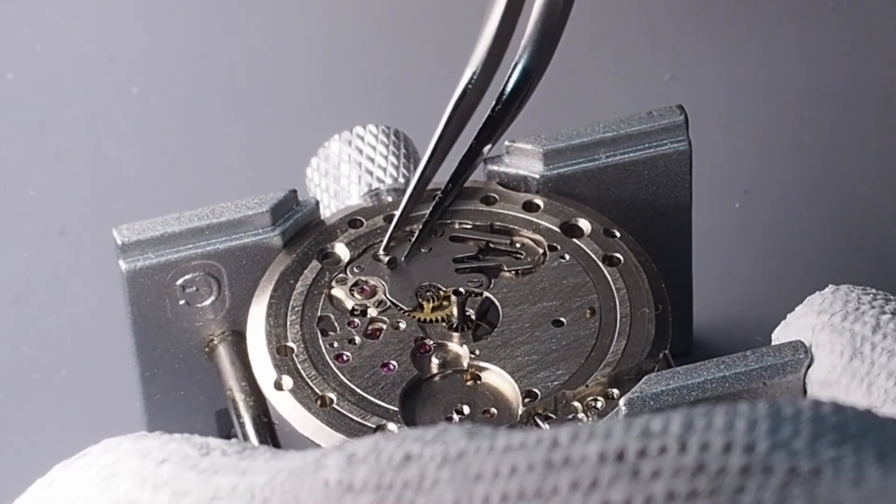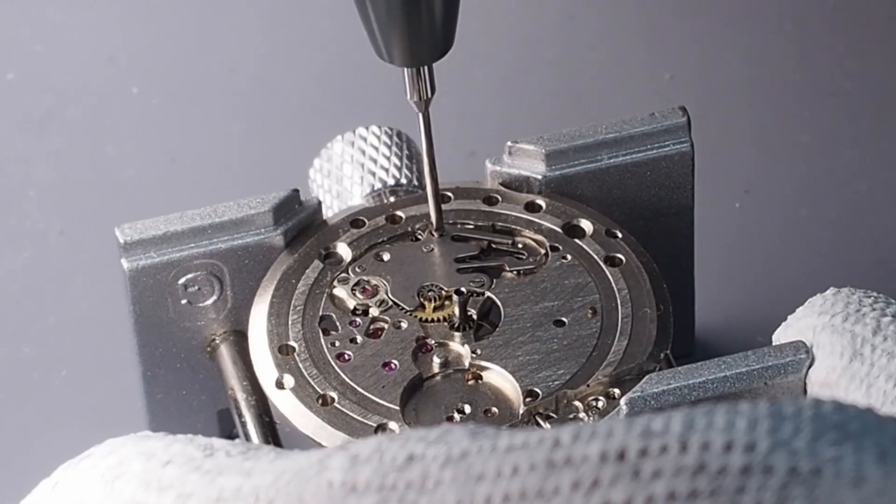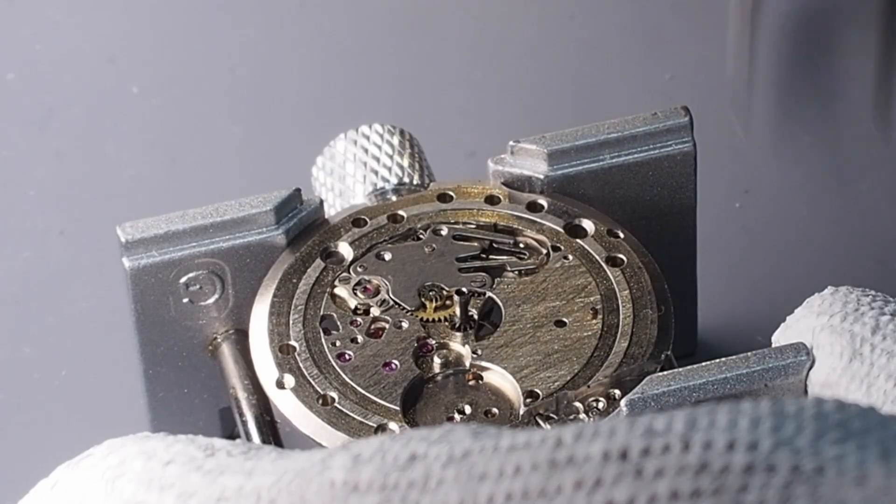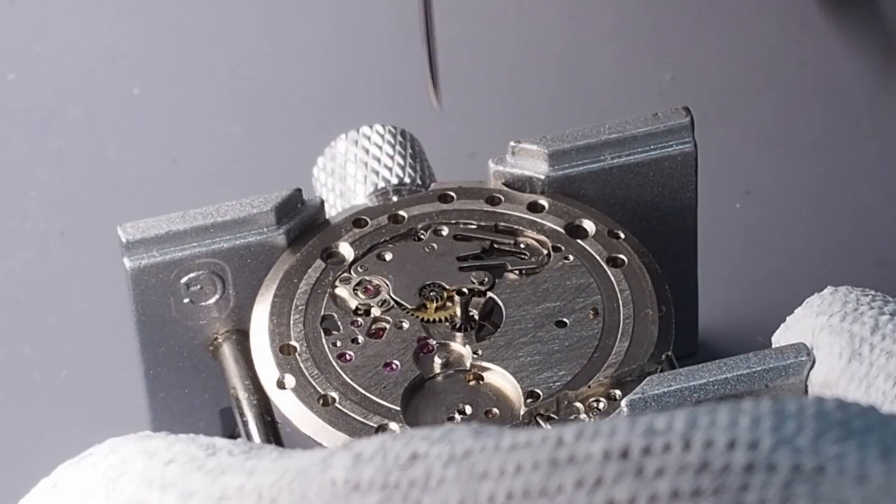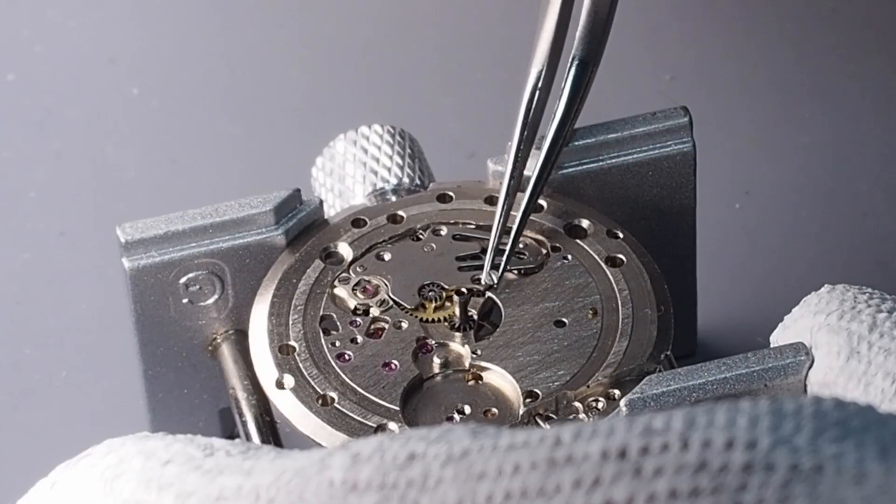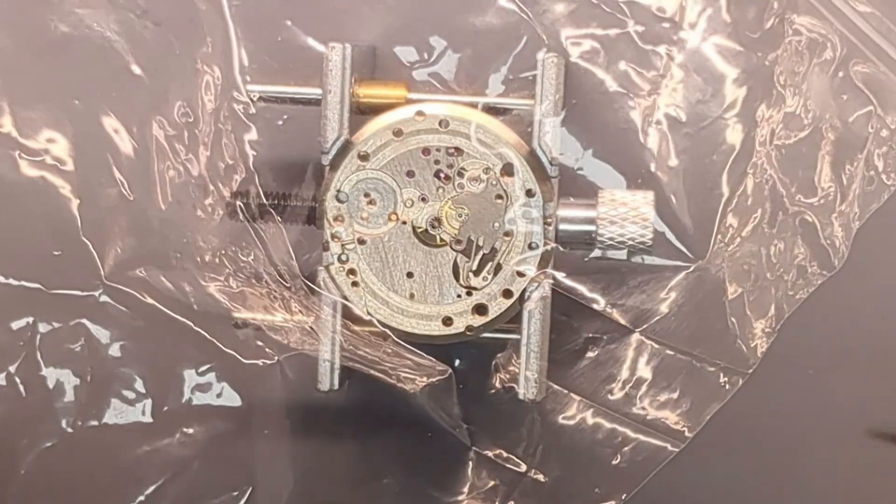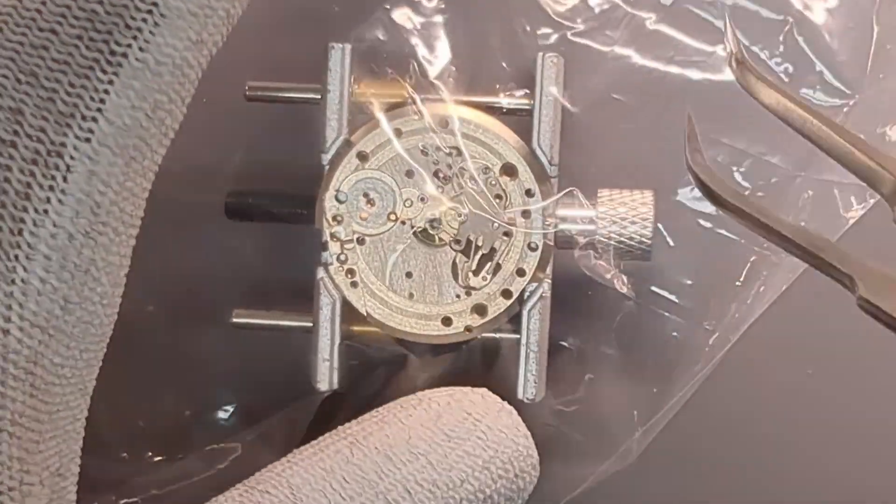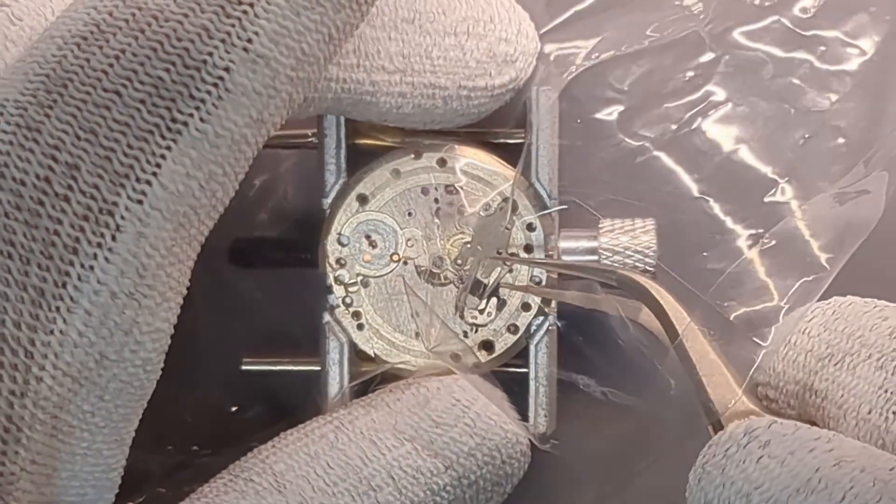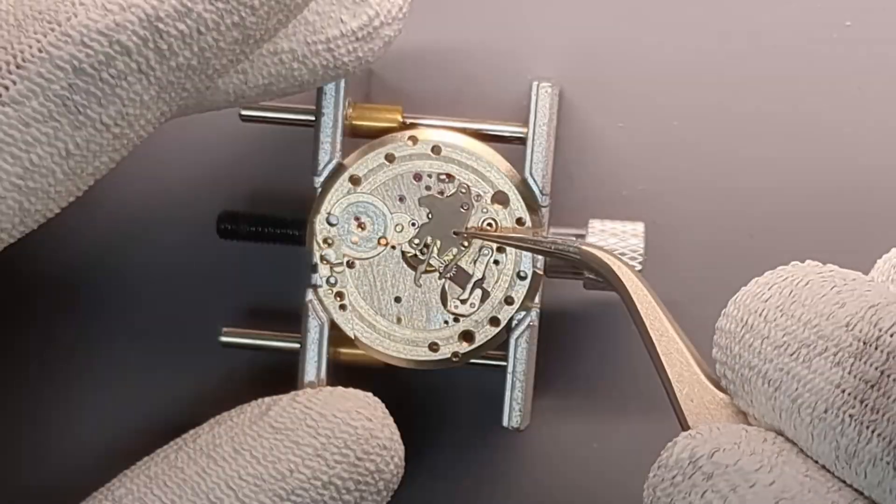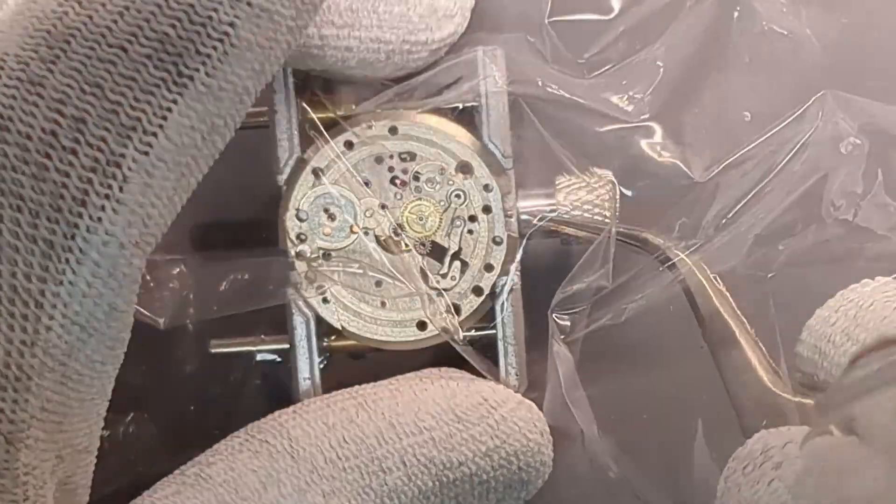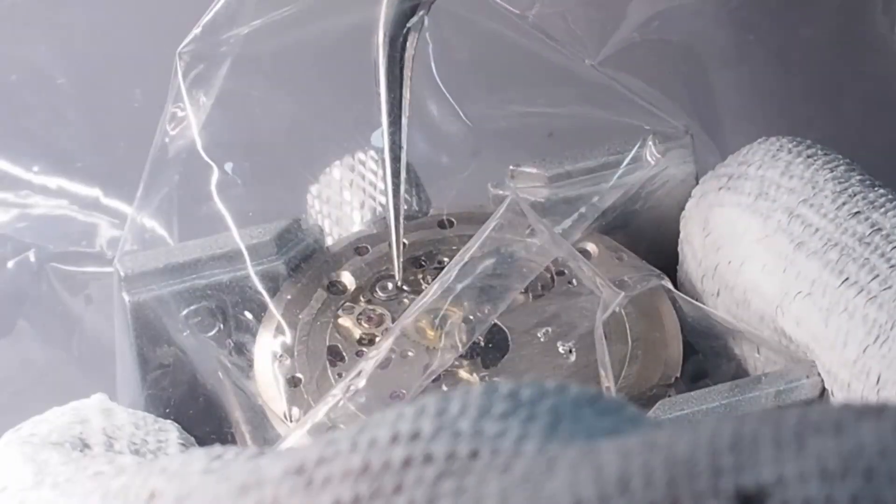Next, I will disassemble the keyless mechanism, starting by removing the setting lever spring. I'm using polyfilm to make sure I won't lose any parts. Now, I attempt to remove the yoke spring.